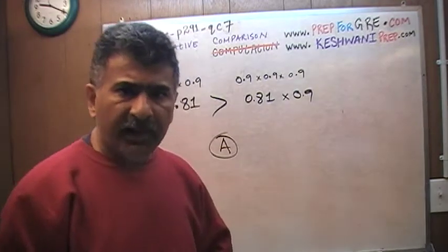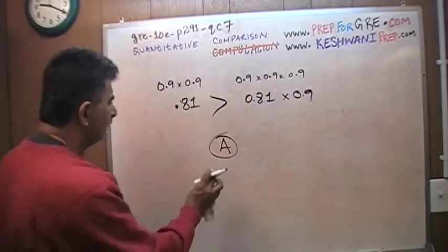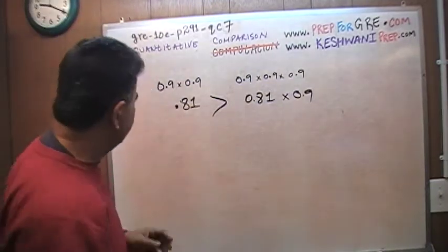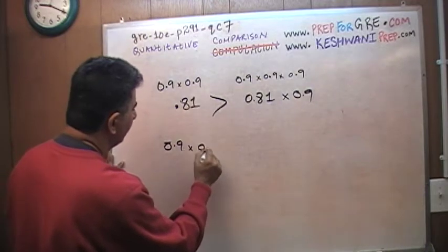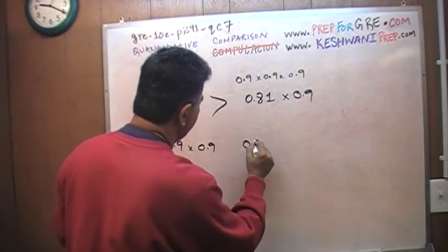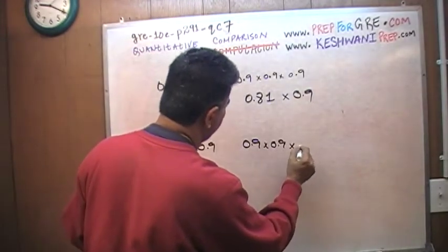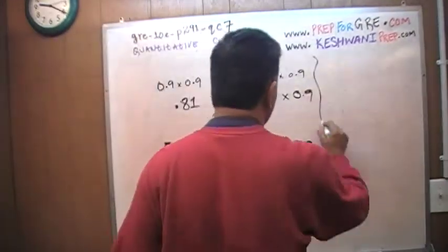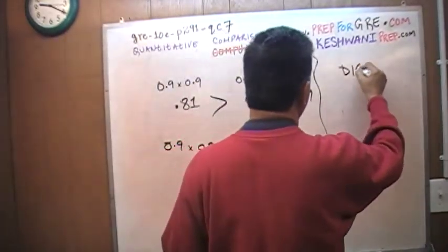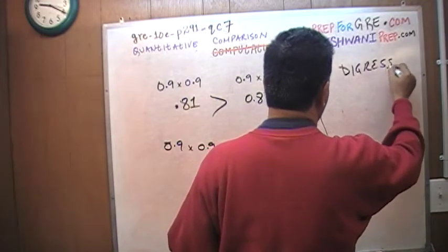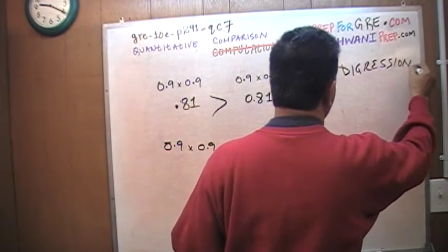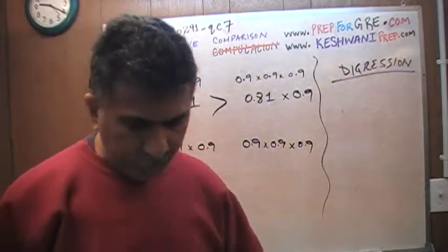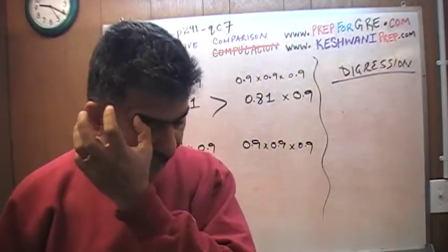Now I'm going to do the same problem in a little bit different way. 0.9 times 0.9 versus 0.9 times 0.9 times 0.9. Before I do this problem, let's digress. And if you don't know what digress means, look it up and learn it. Digress means to go off a topic.